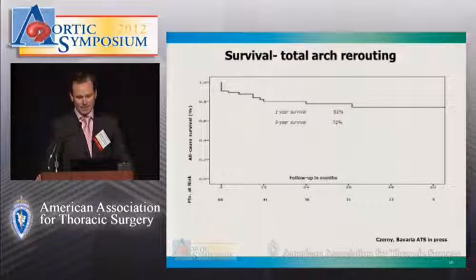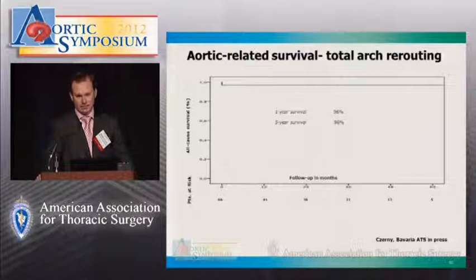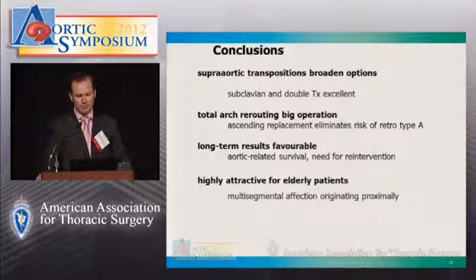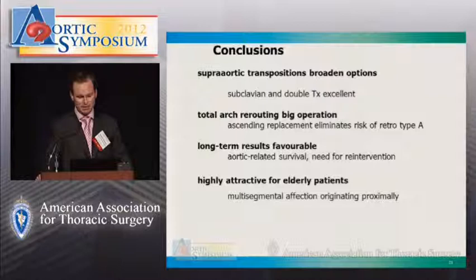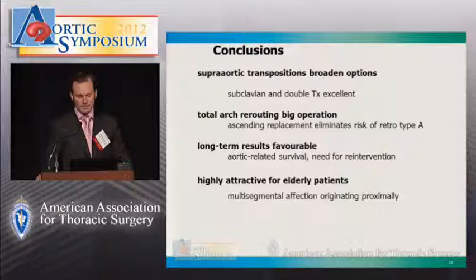Survival rate over a five-year period is very acceptable, and aortic-related survival with regard to freedom from redo in the treated segments is excellent. In conclusion, a combined vascular and endovascular approach for multisegmental thoracic aortic disease originating at the level of the arch shows excellent results, especially for subclavian and double transposition. Total arch rerouting remains a major operation, and adding ascending aortic replacement may eliminate the risk of retrograde type A dissection. Long-term results are favorable for aortic-related survival and freedom from re-intervention. These combined approaches are a highly attractive treatment modality, especially for elderly patients with multisegmental thoracic aortic pathology originating at the level of the aortic arch.